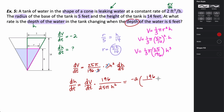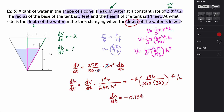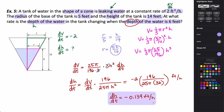Substituting: dh/dt equals negative 2 times 196, all over 25π times 6², which is 36. The units for height changing over time are feet per hour. Plugging into a calculator gives approximately negative 0.139 feet per hour. This is the rate at which the depth of the water changes with respect to time.